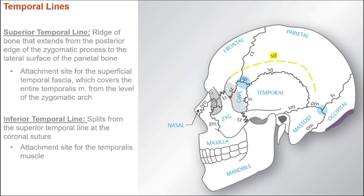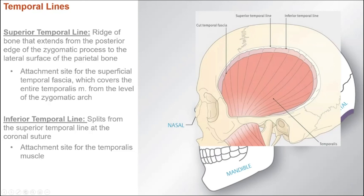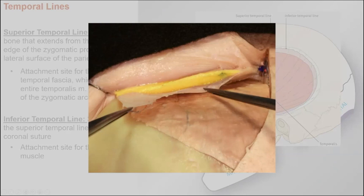In anterolateral approaches, the temporal lines are also quite useful. The superior temporal line is a small ridge extending from the posterior edge of the zygomatic process posteriorly along the lateral surface of the parietal bone, and it's where the superficial temporal fascia — which covers the entire temporalis muscle — attaches. The inferior temporal line splits from the superior temporal line right as it encounters the coronal suture, and this is where the temporalis muscle itself attaches. These become useful as you dissect to preserve the frontal branch of the facial nerve, as the anterior third of the fascia is composed of two layers separated by a fat pad, through which you find the frontal branch of the facial nerve and the deep temporal vessels.